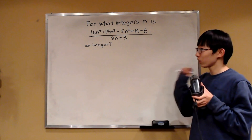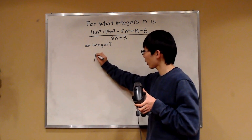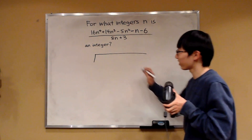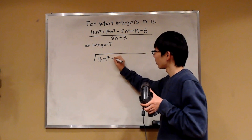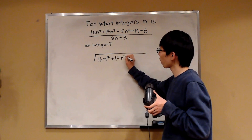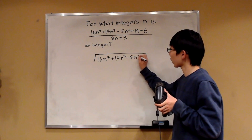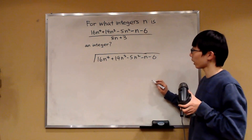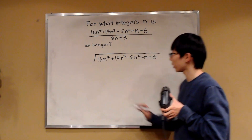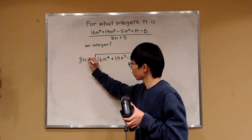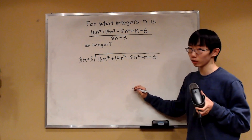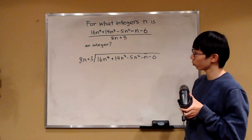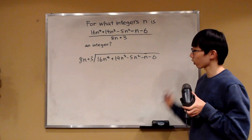I'll walk you through how to do that. To divide polynomials, we take our division symbol and put our dividend polynomial inside. In this case, it's our degree-4 polynomial that we're putting inside. And then on the outside over here, we put our divisor polynomial — that's going to be 8n plus 3. So as you can see, very similar to regular number division. Our quotient polynomial will appear on the top. So what's the first term in our quotient polynomial?